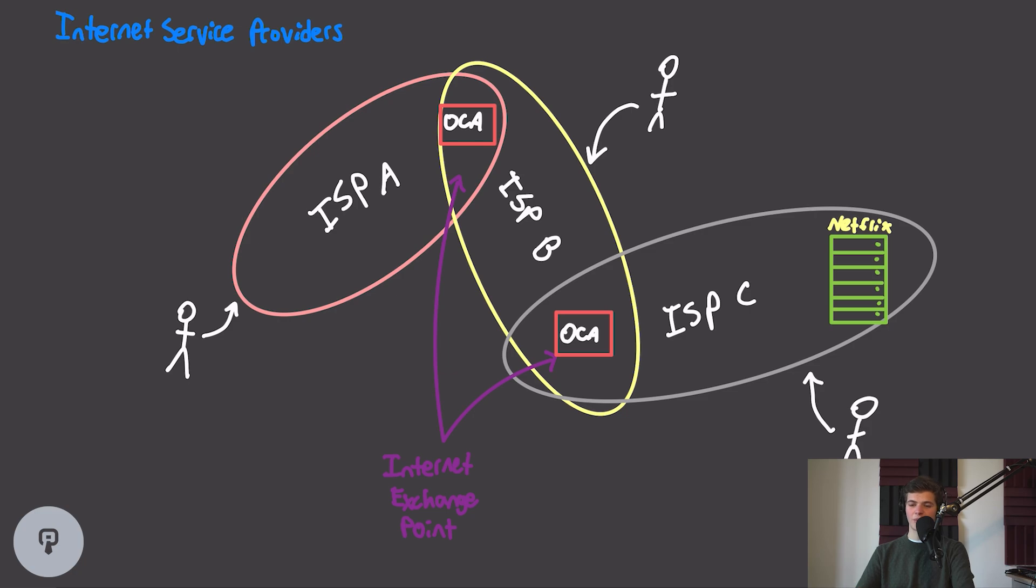Netflix refers to the hardware that they deploy as Open Connect Appliances, or OCAs. These OCAs store a cached copy of all of the movies and TV shows that are sitting on Netflix's data center, and they allow the really frequently accessed content to be accessed much more quickly by end users. So, for example, this user over here, instead of having to traverse the entire internet to get to Netflix's data center, can simply go directly to this Open Connect appliance that's sitting on their internet service provider.